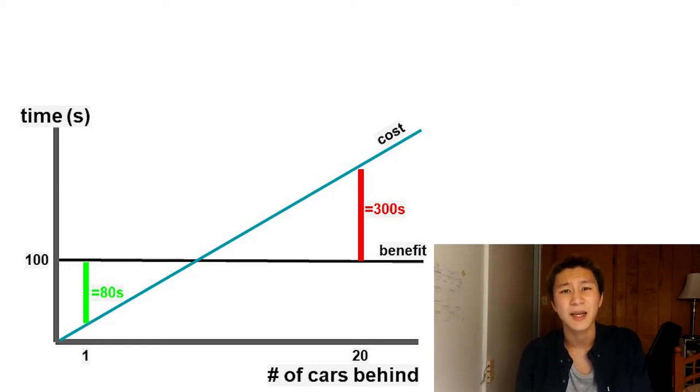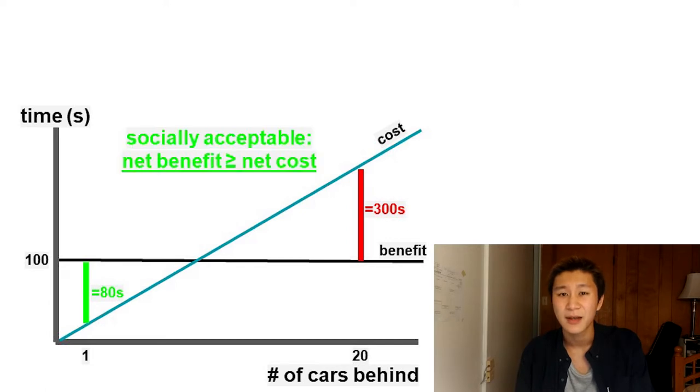So, when is it socially acceptable to turn left? When the personal net benefit is greater than or equal to the net communal cost. In graphical terms, this is the area to the left of when the two lines cross.